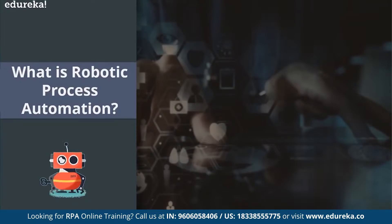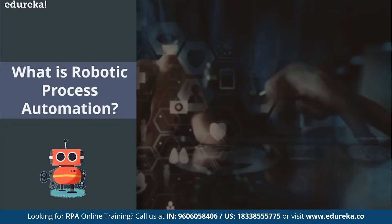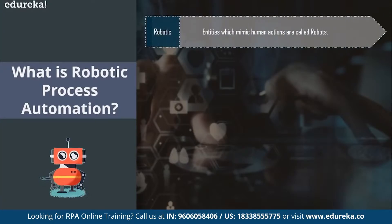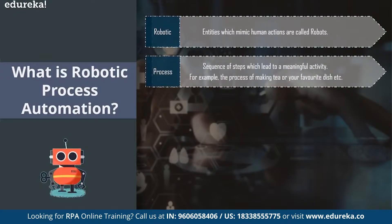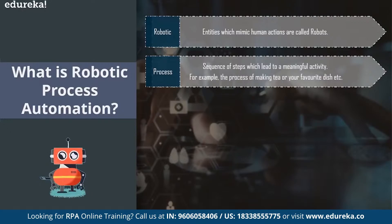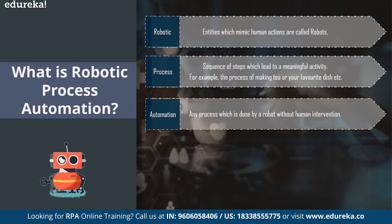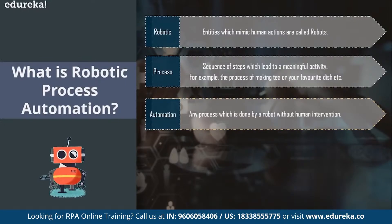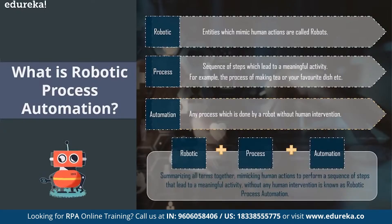RPA stands for three terms: robotic, process, and automation. Robotic means entities which mimic human actions — these are called robots. Process is basically a sequence of steps which lead to a meaningful activity. For example, if you're making tea or coffee, you follow a sequence of steps — that sequence is a process. Automation is any process done by the robot without any human intervention. It could be a small process or a very large enterprise process. Summarizing all these terms: mimicking human actions to perform a sequence of steps leading to a meaningful activity without human intervention is robotic process automation.